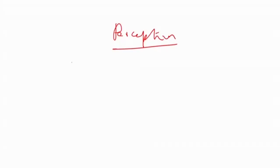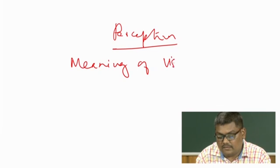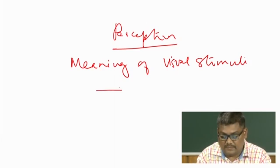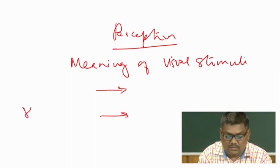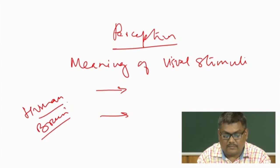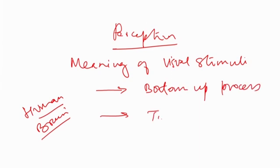Now, perception — which is making meaning of visual stimuli — is believed to be a two-part process. In terms of the human brain, perception happens through something called a bottom-up process and something called a top-down process.